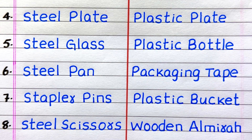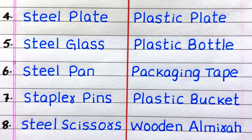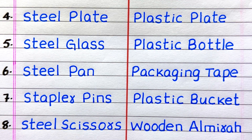The fourth example of a non-metal is plastic plate. Fifth, plastic bottle. Sixth, packaging tape. Seventh, plastic bucket. Eighth, wooden almera.